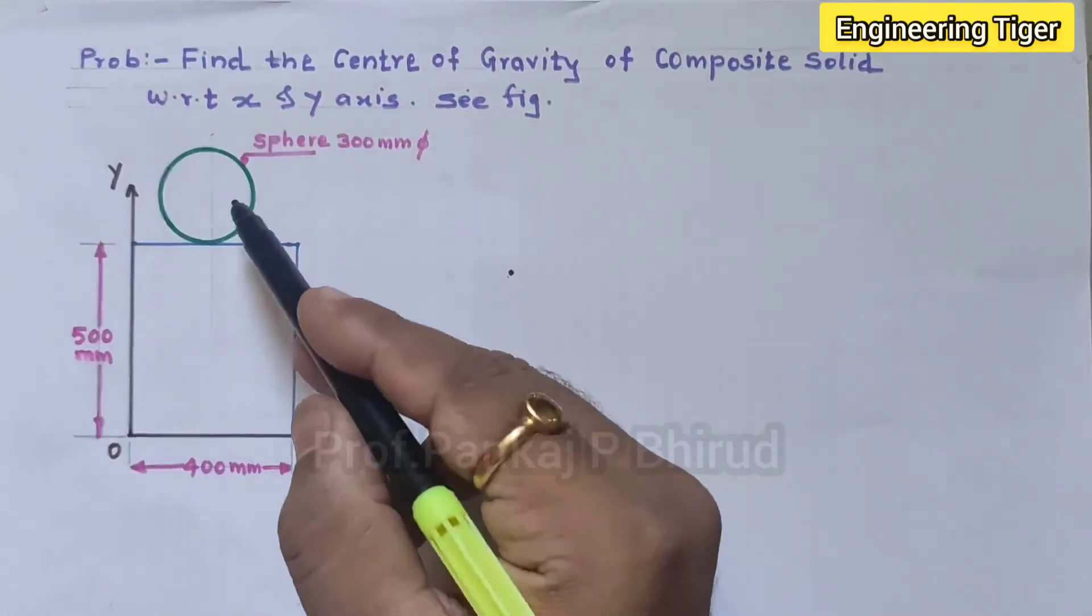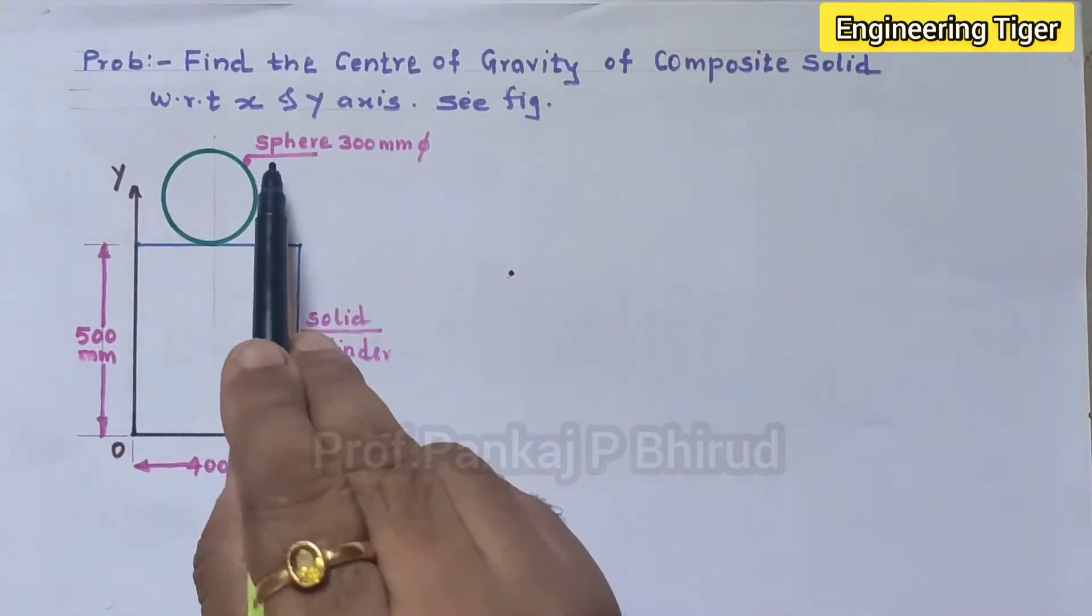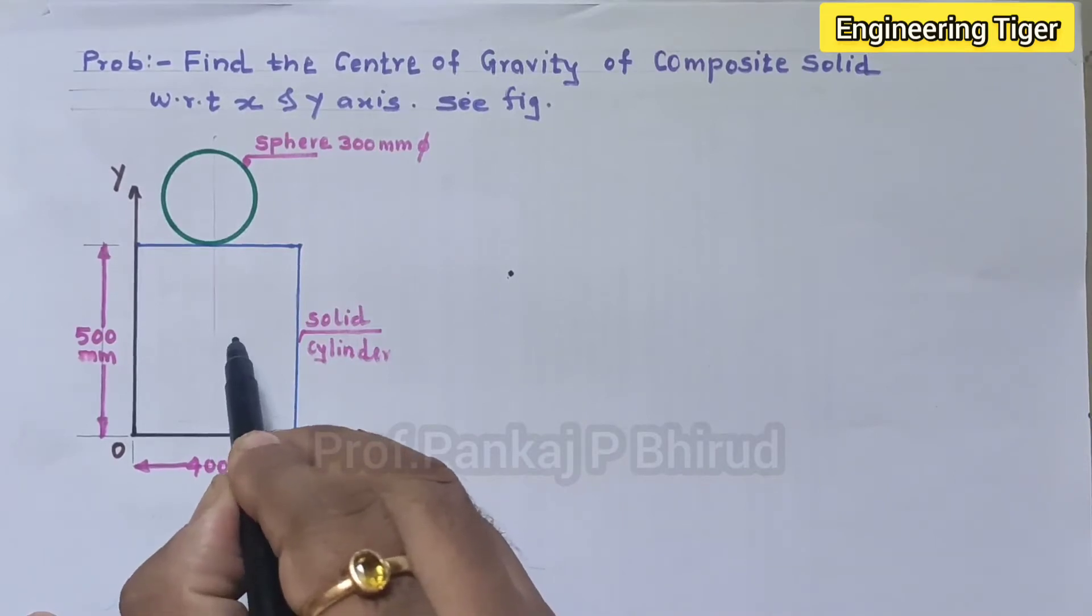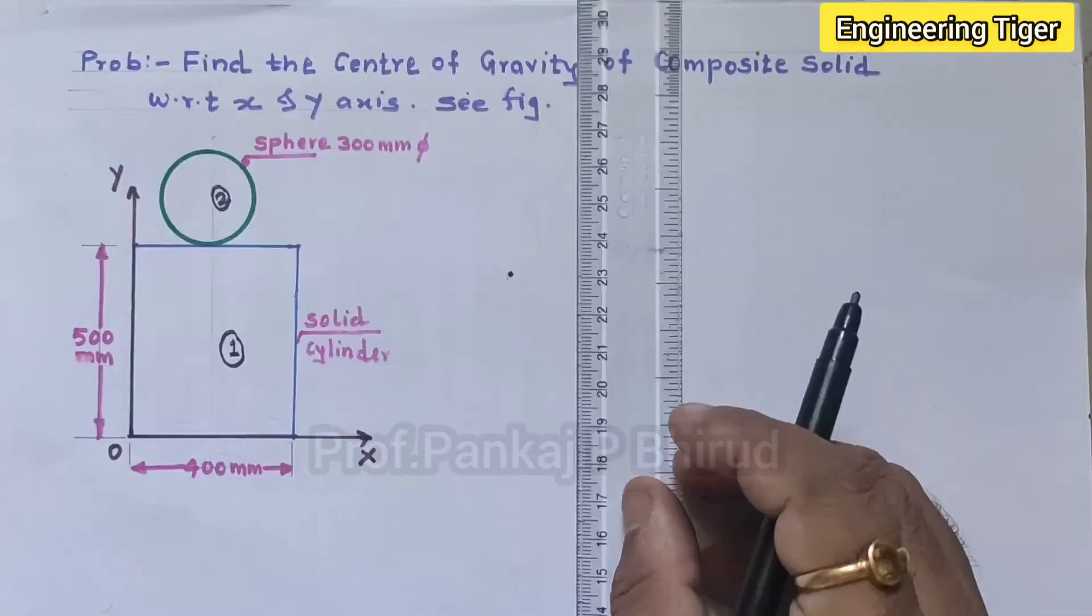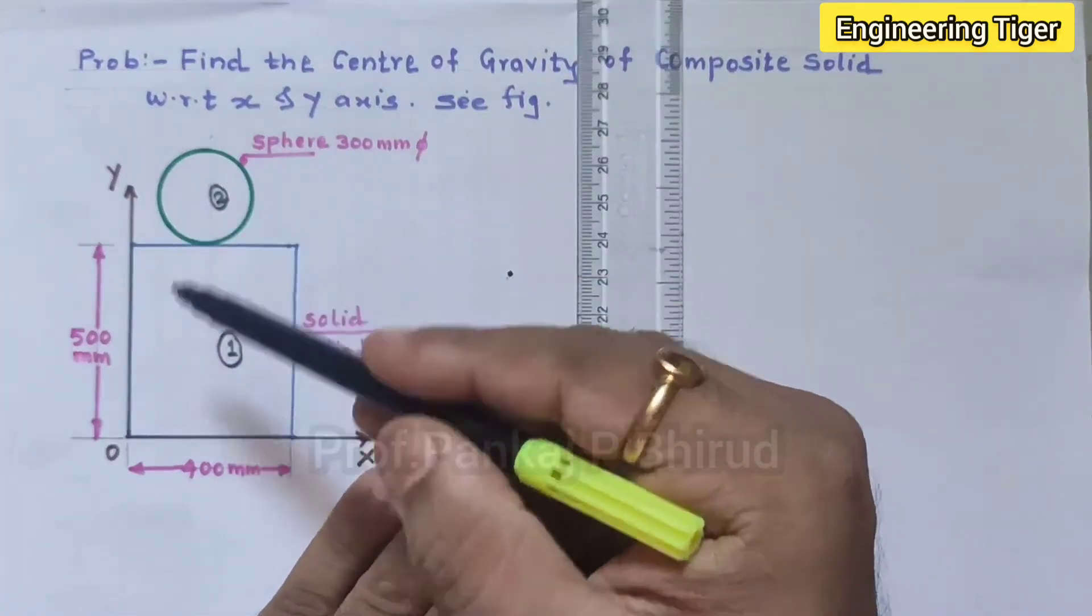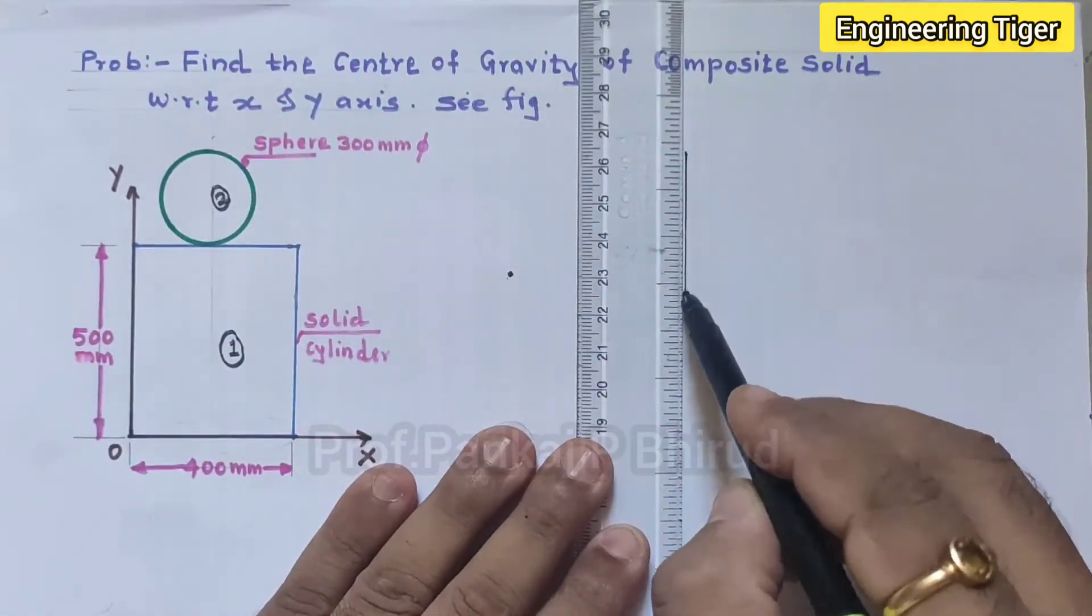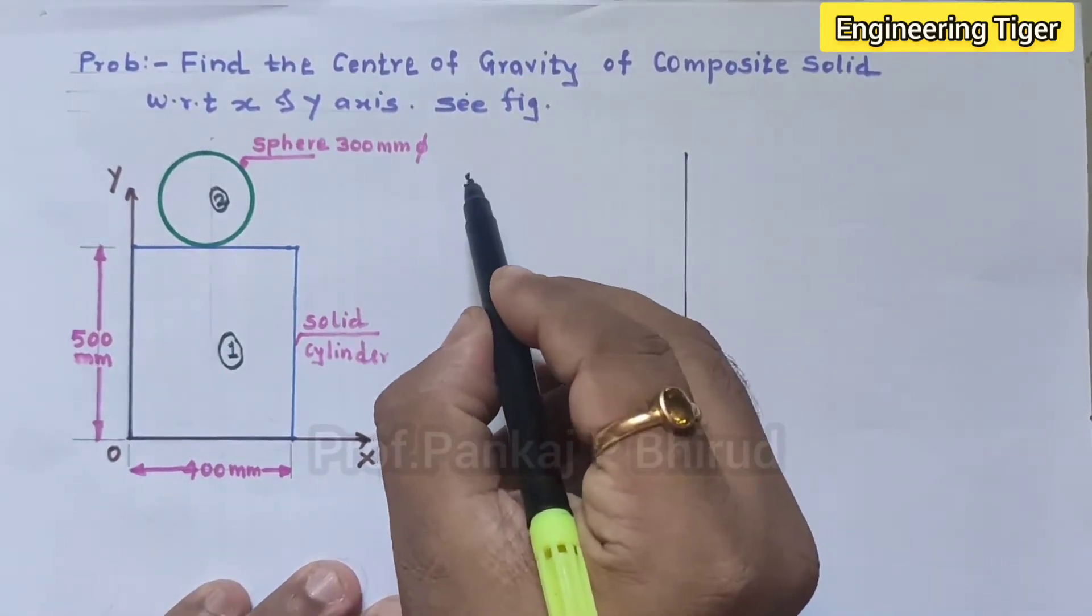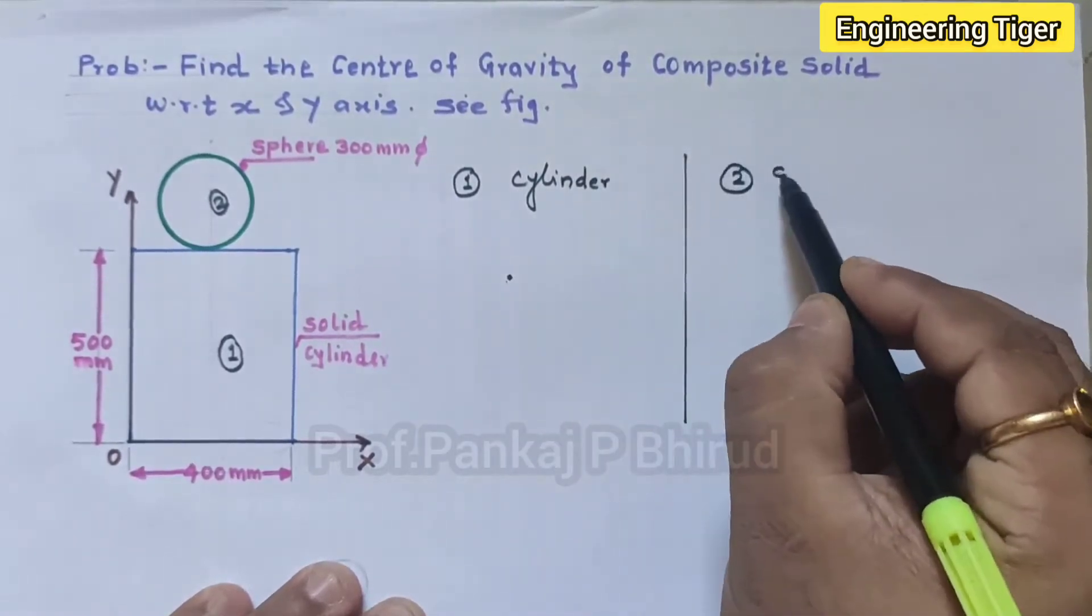Now divide this composite body into two parts: one is solid cylinder and second one is sphere. So for the solid cylinder we will consider body number one and for sphere it is body number two. Now let us divide into two parts. So first figure is cylinder and second figure is sphere.